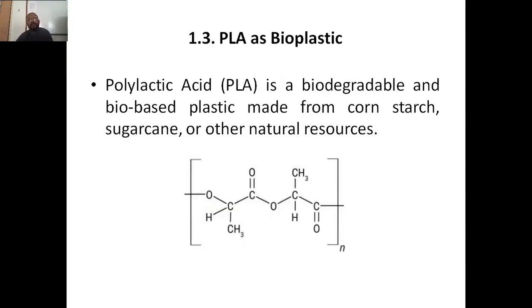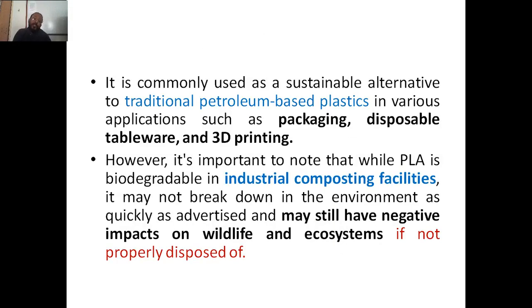The next topic is PLA — polylactic acid — also a biodegradable and bio-based plastic derived from cornstarch, sugarcane, and other natural resources. Unlike PHA, which is produced by microbes, PLA is plant-derived. It is mainly used as a sustainable alternative to petroleum-based plastics in applications such as packaging, disposable tableware, and 3D printing. PLA is biodegradable in industrial composting facilities but may not break down quickly in the natural environment, and if not properly disposed of it can still negatively impact wildlife and ecosystems.